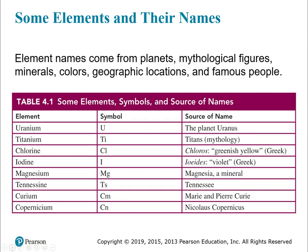Here's a table with some of the elements and their names. The names of elements come from all over the place — planets, mythological figures, colors, the places where they were first discovered, famous people — literally everywhere. Each element has a full name along with a symbol, and the symbol is what you will see in the periodic table.